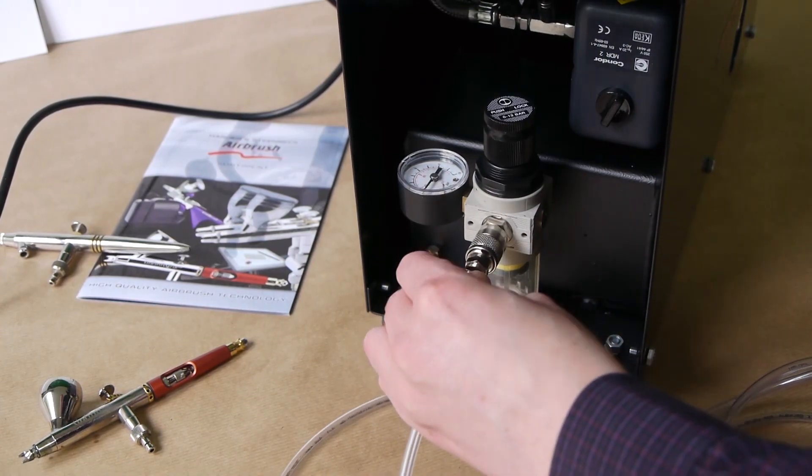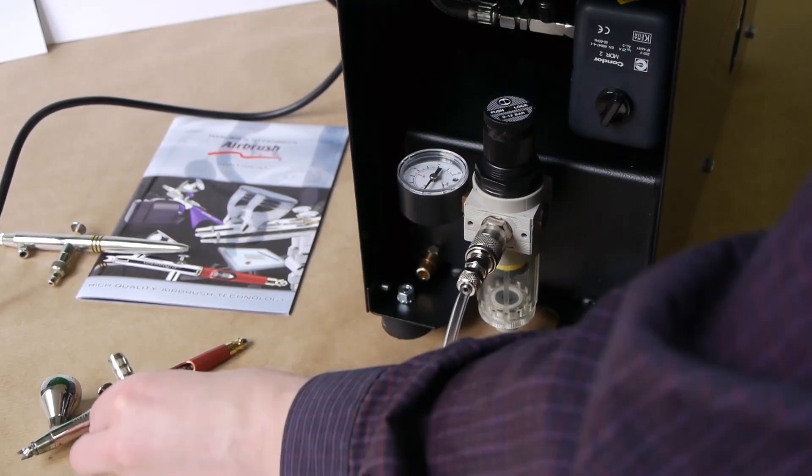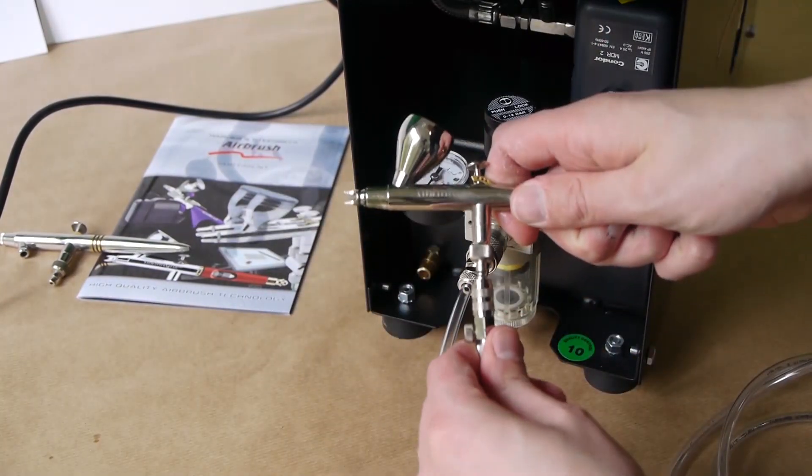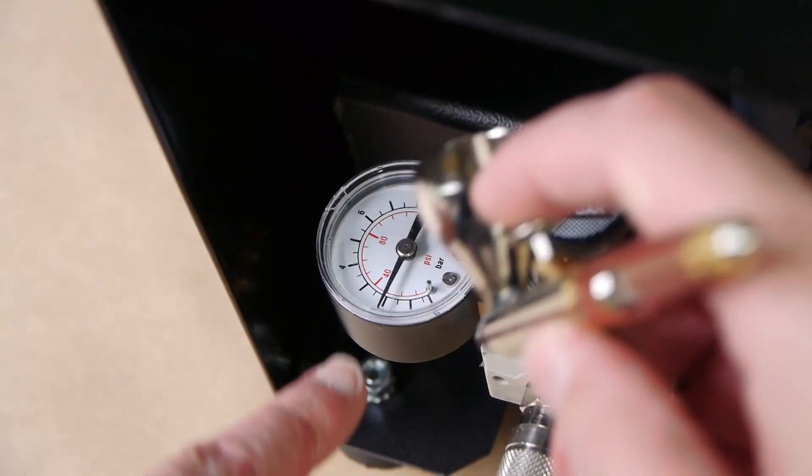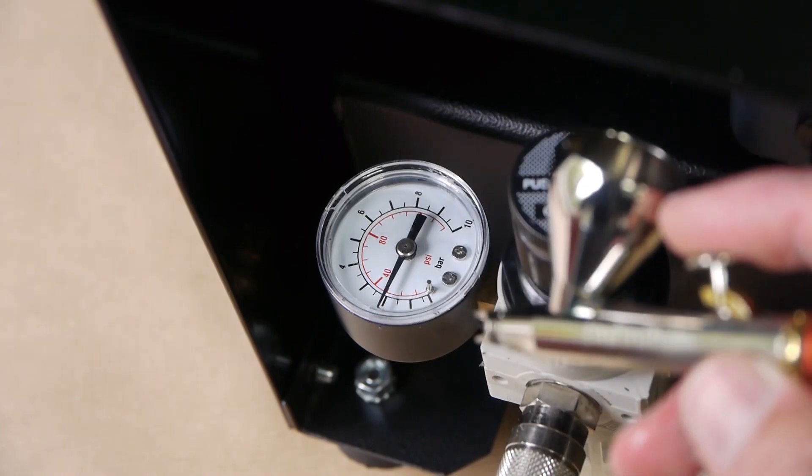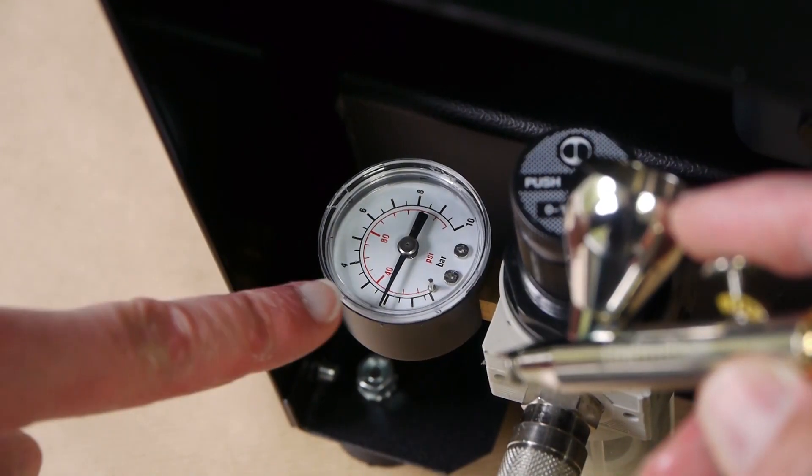Ideally, you should plug in your airbrush device when adjusting the operating pressure and pressing the lever. Only then you will see the actual set working pressure, which may otherwise vary by 0.2 bar.